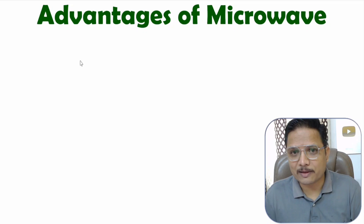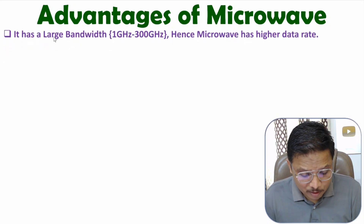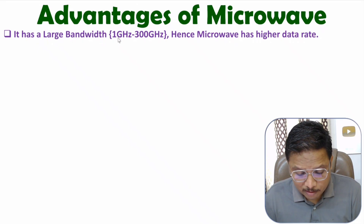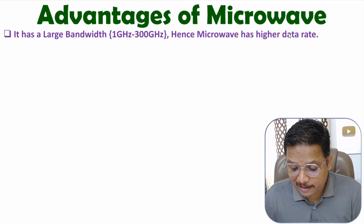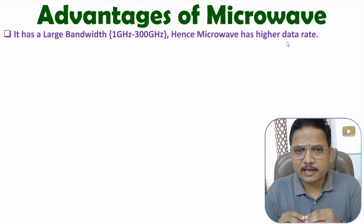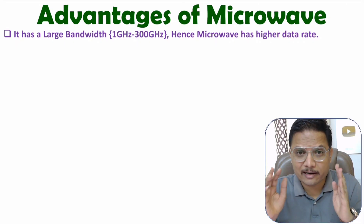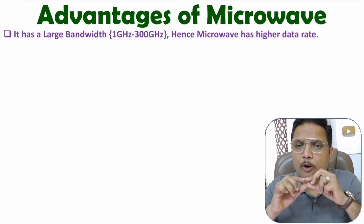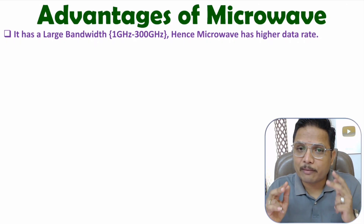The first basic advantage is based on bandwidth. Microwave has a large bandwidth because we have a broad frequency range, ranging from 1 GHz to 300 GHz. That's why microwave supports a higher data rate of communication. Because of this broad range of frequencies, we can communicate with a higher data rate using microwave.